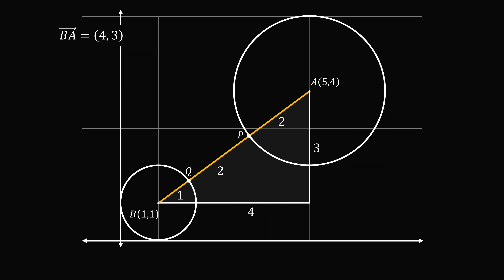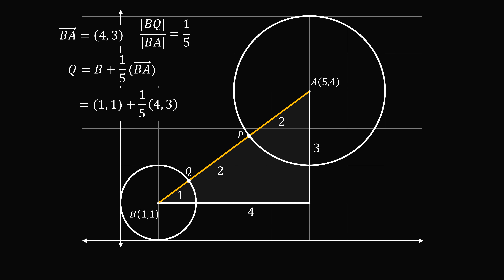To find the coordinates of point Q, we start at point B and add some proportion of the vector BA. The full hypotenuse has length 5 and segment BQ has length 1, so we add one-fifth of the vector. Point Q equals B plus one-fifth of BA: substituting (1, 1) plus one-fifth of (4, 3), we get Q at coordinates (1.8, 1.6).